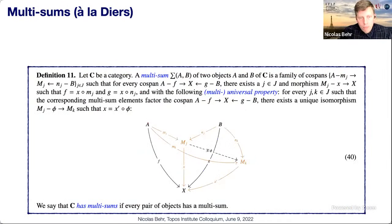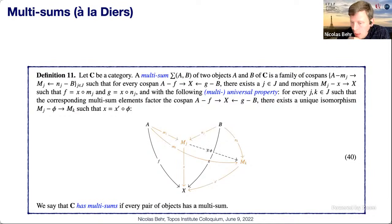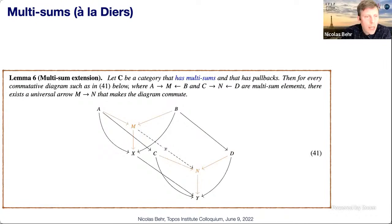Another concept we need from Diers' work is multi-sums, also called multi-coproducts. A multi-sum for two objects A and B is a family of cospans that classifies all cospans from A and B in an essentially unique way — whenever two multi-sum elements classify the same cospan, there must be an isomorphism between them. This is essentially a generalization of the coproduct.